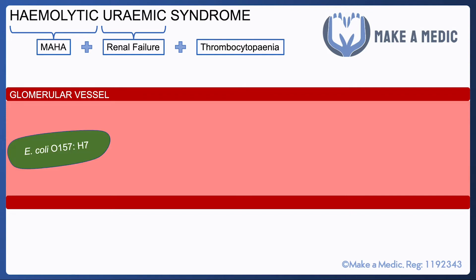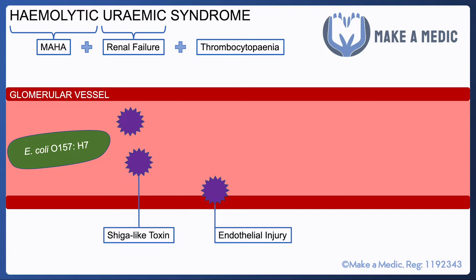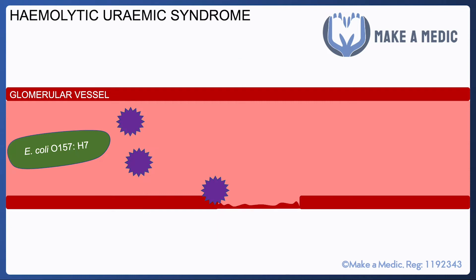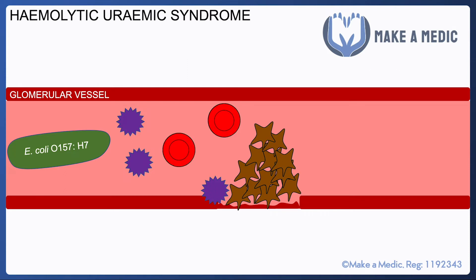HUS is usually associated with a specific type of E. coli — E. coli O157:H7 — because it produces something called Shiga-like toxin. The problem with Shiga-like toxin is that it can cause endothelial injury, especially within the glomerular vessels. Once it causes glomerular injury, we get a platelet plug forming, and red cells become unable to pass through this narrowing within the glomerular vessels, leading to destruction of those red cells.